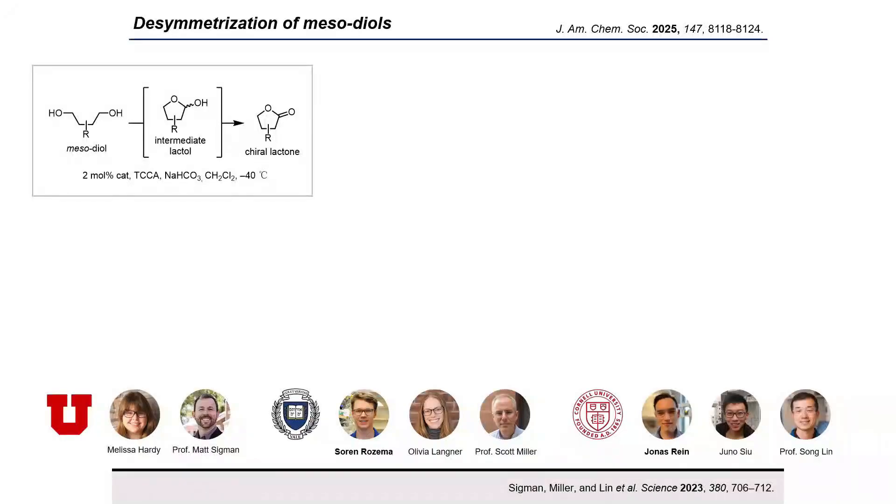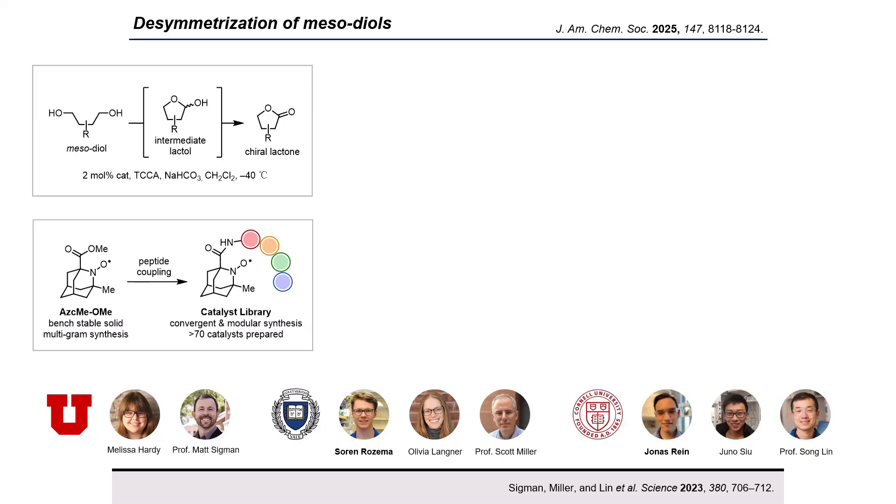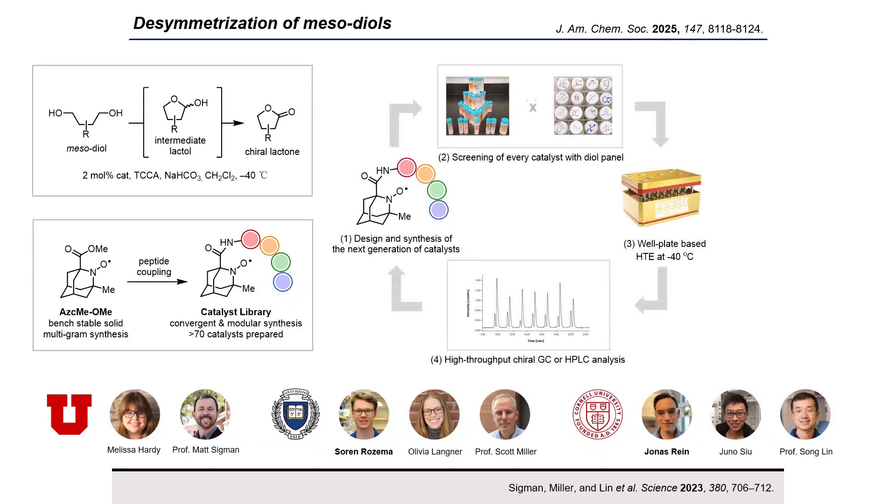We thought that maybe we could tackle this challenging oxidation of the more hindered site using aminoxyl peptide catalysts that we had previously developed for the desymmetrization of mesodiols to chiral lactones together with the Sigmund and Miller groups. In this work, led by Soren Rosema and Jonas Rhein, we had developed a new aminoxyl radical with an ester handle, ASC-ME, that could be linked to modular chiral peptides, which we optimized via iterative high-throughput screening against a panel of substrates until we identified an optimal peptide, T7, which provided high enantioselectivity over a broad range of substrates.